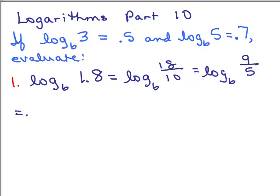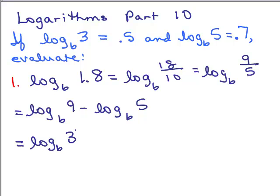Now I've got a quotient, so I could take the log base B of 9 minus the log base B of 5. Now here's the problem. I only know what the log of 3 is and the log of 5, so what could I do with this 9? I could write that as 3 squared. So I'm going to rewrite that as log base B of 3 squared minus the log base B of 5.